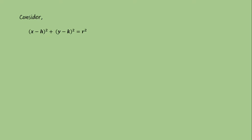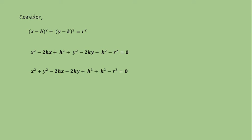Consider the center-radius form: x minus h, the whole square, plus y minus k, the whole square, is equal to r square. After solving these brackets on the left-hand side, it can be written as x square minus 2hx plus h square plus y square minus 2ky plus k square minus r square is equal to 0. Shuffling these terms, we get x square plus y square minus 2hx minus 2ky plus h square plus k square minus r square is equal to 0.